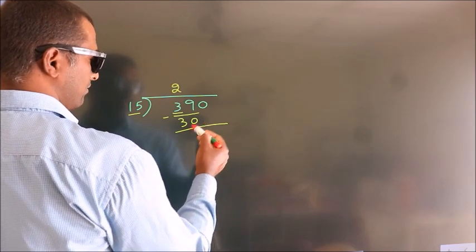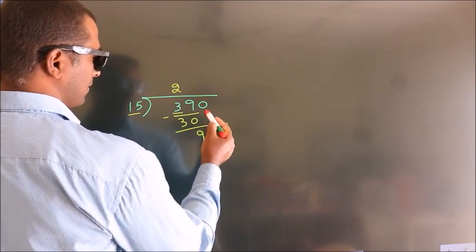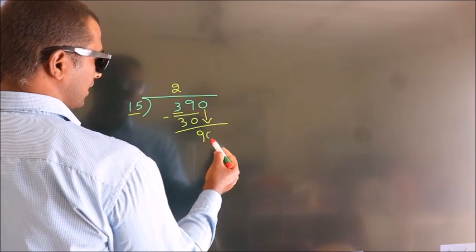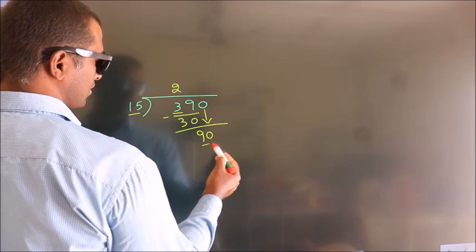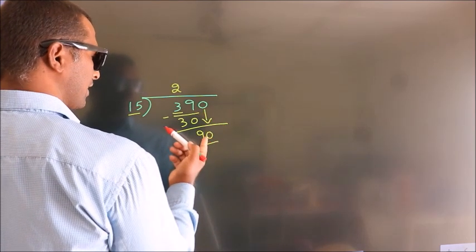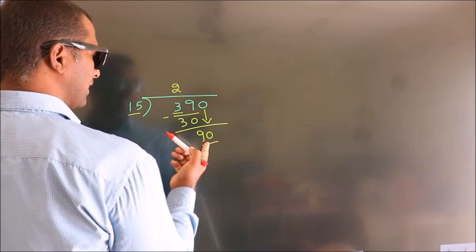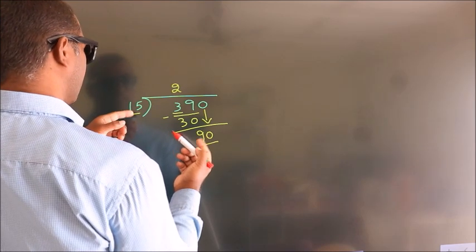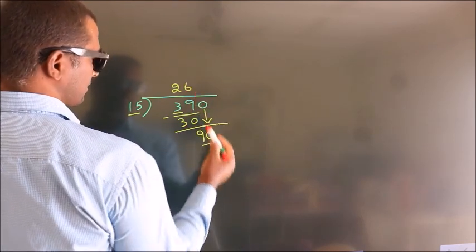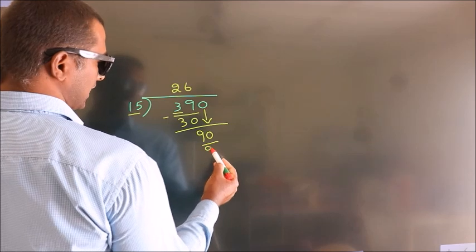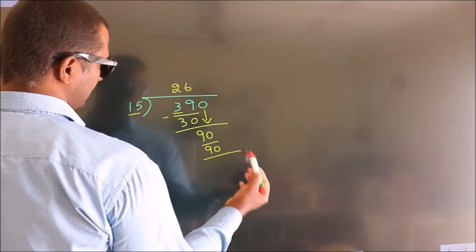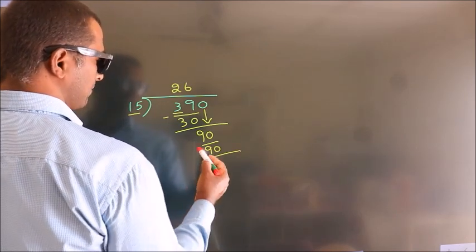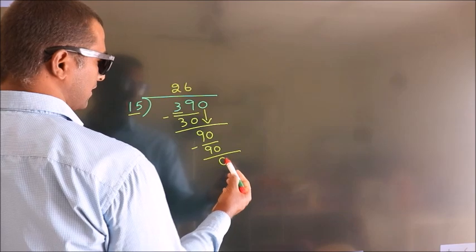After this, bring down the beside number — so bring 0 down, giving us 90. When do we get 90 in the 15 times table? 15 times 6 equals 90. Now we subtract, and we get 0.